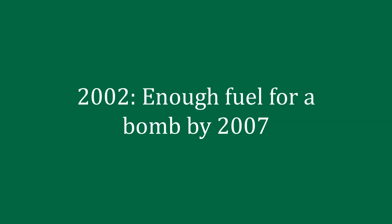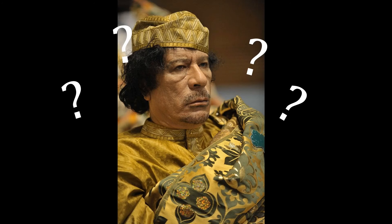In 2002, the estimate on Libya was that Gaddafi would have enough fuel for a bomb by 2007. Of course, the Libya nuclear program never made it that far — Gaddafi gave it up in 2003. What became clear as the United States was receiving Libya's nuclear materials is that the country had no idea what it was doing, and the possibility that Libya would have nuclear fuel for a bomb in 2007 was basically nil.